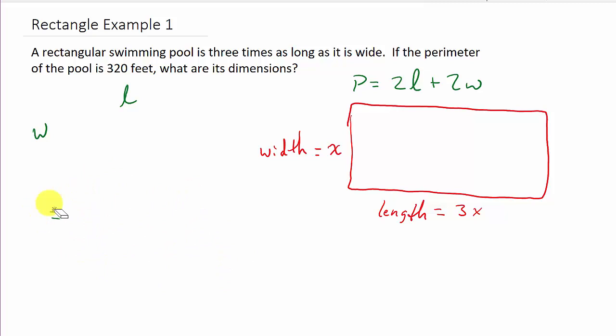All right. Now, all we do is we just plug everything into here. Okay. So, we've got the perimeter, P, which is 320. So, that's 320 equals twice the length. So, that's 2 times the length. Well, what's the length? It's 3x. 3x plus 2 times the width. Well, what's the width? It's x. So, 2 times x.